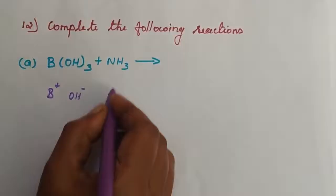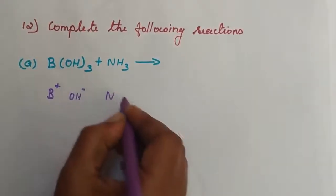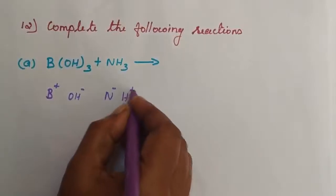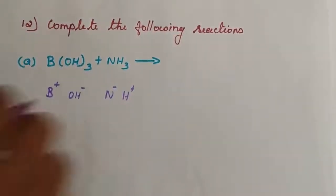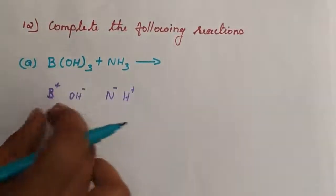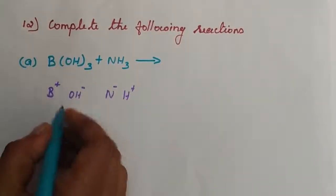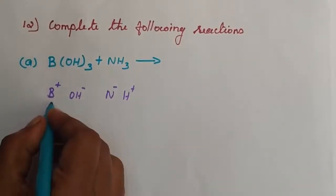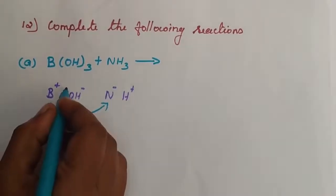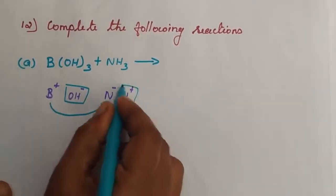That is ammonia — hydrogen is positive. So nitrogen is minus and hydrogen is plus. B plus is positive and the negative nitrogen minus will combine. Here OH minus and H plus are also present.